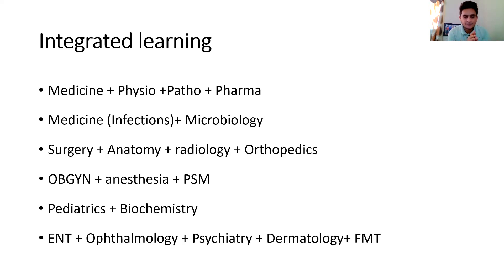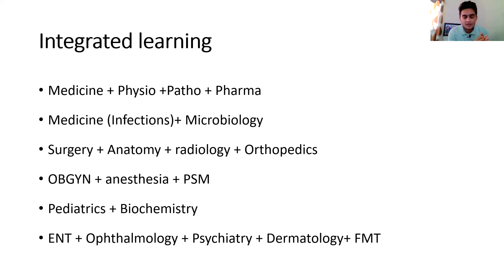For integrated learning, I advise combining Medicine with Physiology, Pathology, and Pharmacology. For example, you can read CVS from Physiology, then its pathological changes from Robbin's Pathology, then Medicine, and then Pharmacology — understanding the disease entity and how to treat it. For the infection part of Medicine, you can combine it with Microbiology. For surgical sciences, you can start with Anatomy and then combine it with Surgery, Radiology, and Orthopedics.